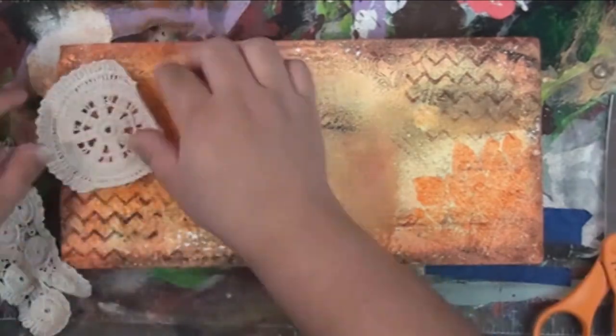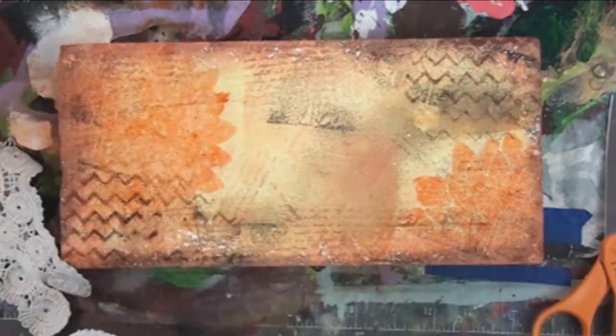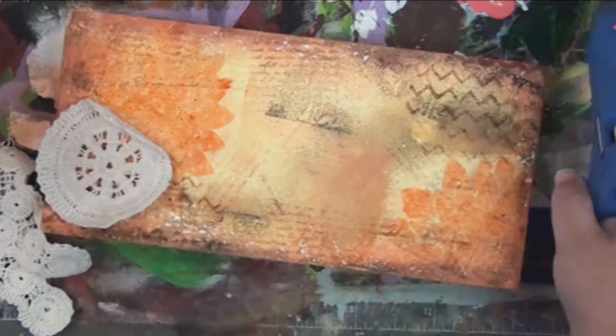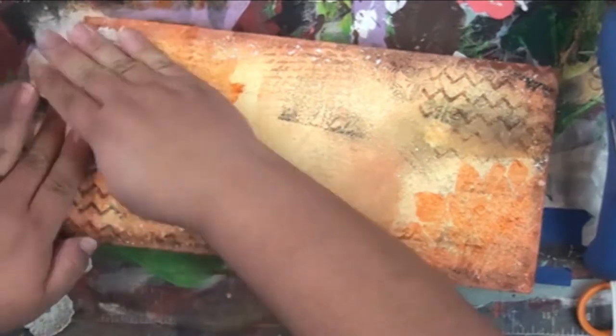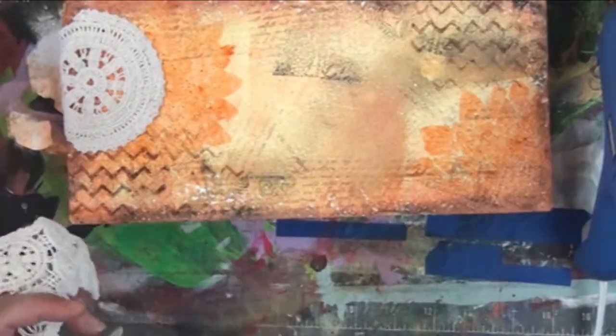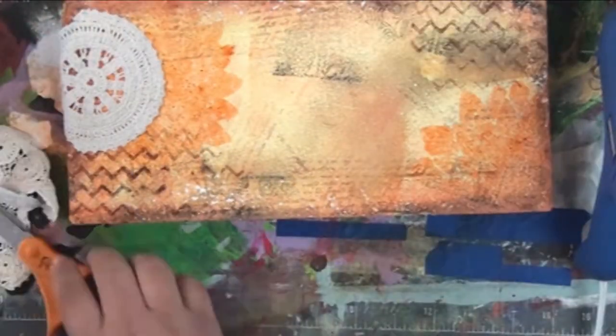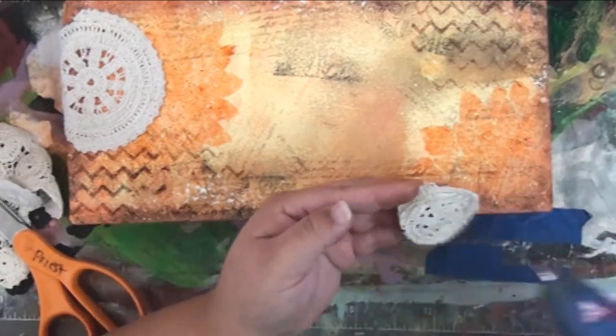Then I have this scrap of lace and I'm cutting some little circles out of it and hot gluing those onto my canvas there to make it look really nice. This gives it some more dimension and a little bit more body so that it feels more like a really true home decor piece.